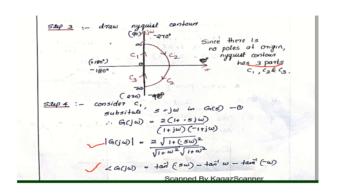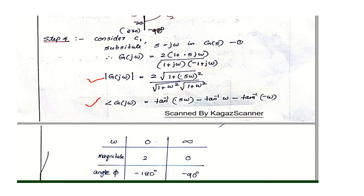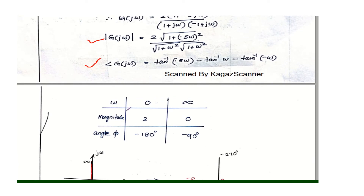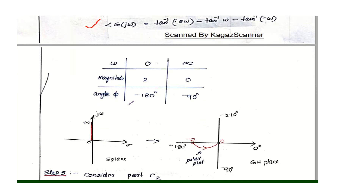The omega value goes from 0 to infinity. When omega equals 0, the magnitude evaluates to 2. When omega goes to infinity, the magnitude goes to 0. The angle at omega equals 0 is 0 degrees, and at omega equals infinity, tan inverse of infinity is 90 degrees. We use these values to plot the first part of the Nyquist plot.